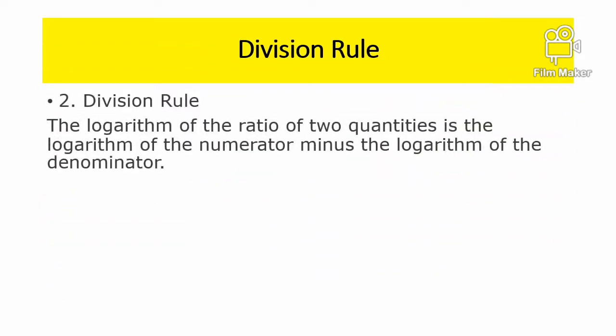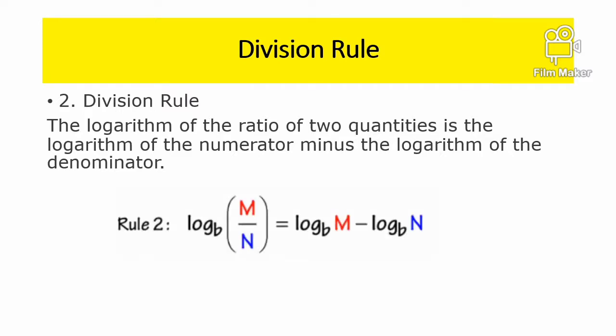Division Rule. Number 2: The logarithm of the ratio of two quantities is the logarithm of the numerator minus the logarithm of the denominator. Logarithm base b of M divided by N equals logarithm base b of M minus logarithm base b of N.